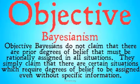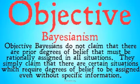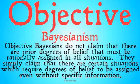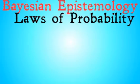Now, this is important because the final objection — and, to me, the most convincing objection to Bayesian epistemology — is going to be the problem of the priors. It's going to be the last objection we look at, and it's going to deal with the assigning of prior probabilities. So keep this distinction in mind.